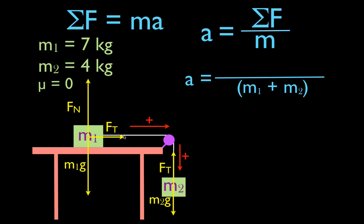For m1, it's moving to the right along the x-axis. There's only one force affecting the acceleration: the tension force Ft, acting in the positive direction, so we put in plus Ft. The normal force and the weight m1g do not affect the acceleration — they act in the y-direction and there is no friction. For m2, it moves along the y-axis and there are two forces acting along that axis: Ft and m2g. Ft points up, and since down is positive, that's minus Ft. m2g points down in the positive direction, so we add plus m2g.